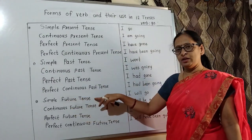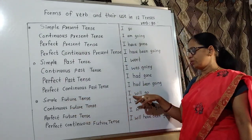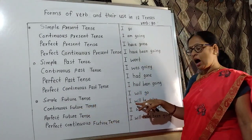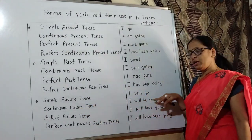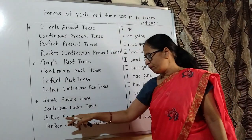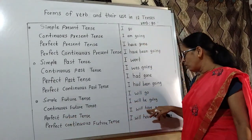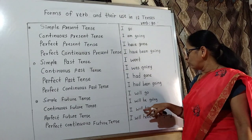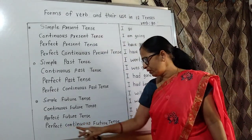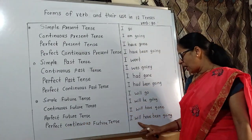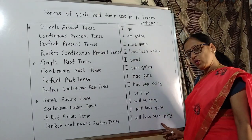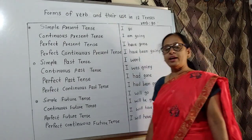Simple future is I will go. Continuous future is I will be going. Perfect future is I will have gone. Perfect continuous future is I will have been going. Thanks for watching.